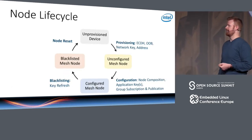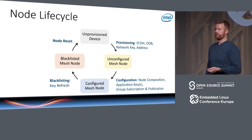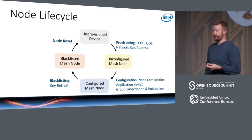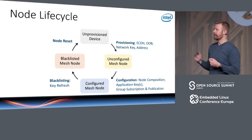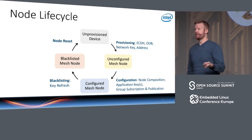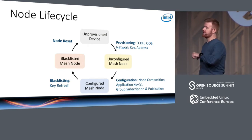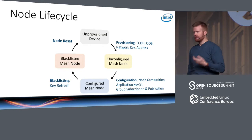When you buy a new device, it will be unprovisioned and completely unusable in a mesh network until you use a provisioner to provision it. During provisioning, you give the initial network key to the node and assign it an address. There's also a device key, which is a special pairwise application key only between the provisioner and that one node, used for configuring and other things. Once provisioned, the node is still not fully usable — you need to assign it additional application keys and configure publication and subscription addresses.